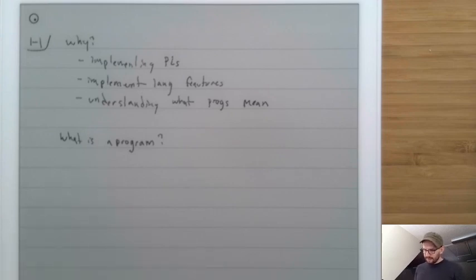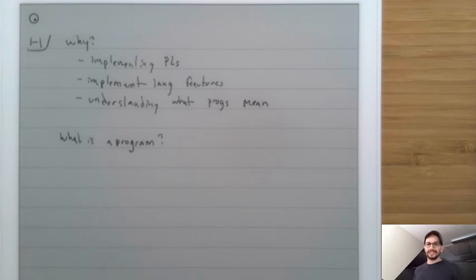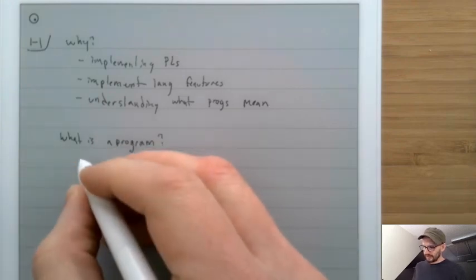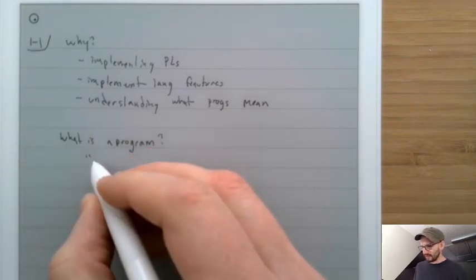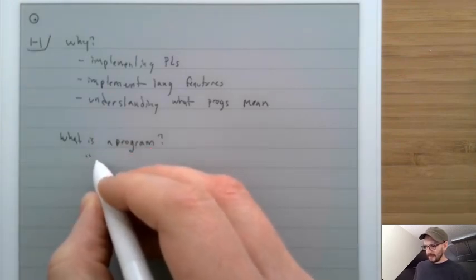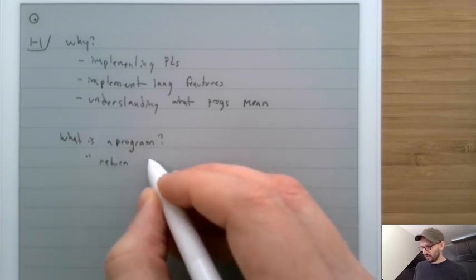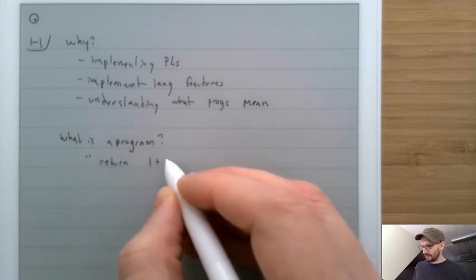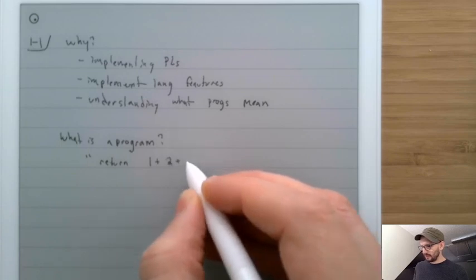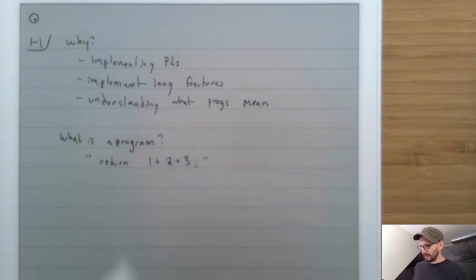For many people, what a program is is simply some programming language syntax, which is really like a string. For example, a program is something like a string with a statement like: return 1 plus 2 times 3. And this right here is a program.